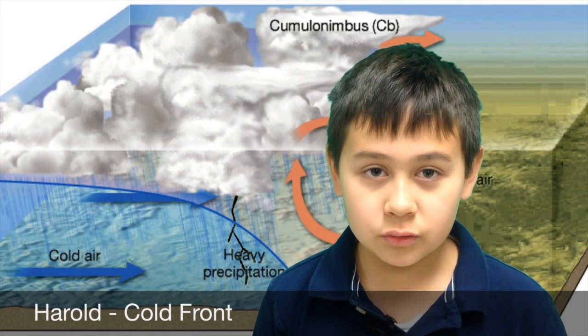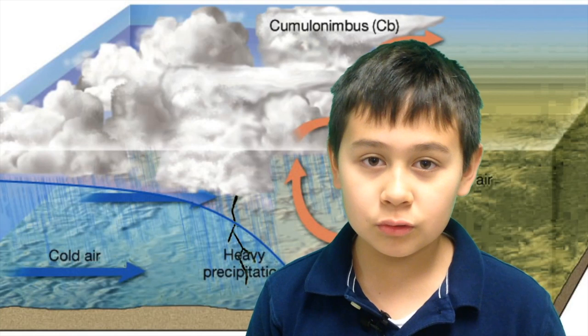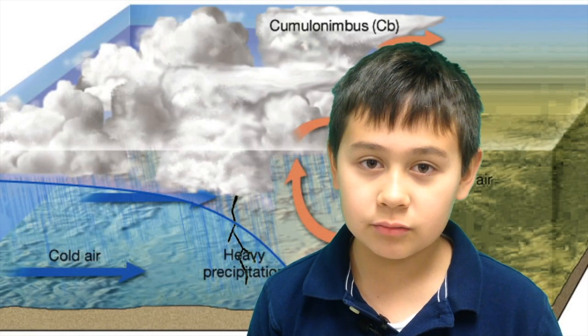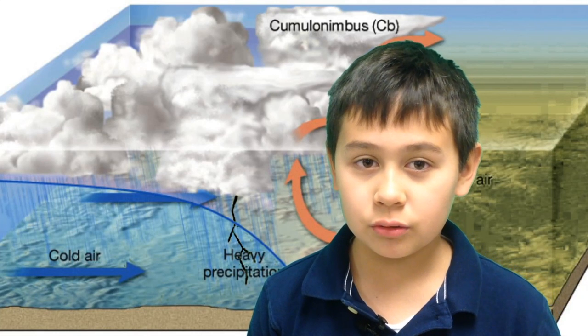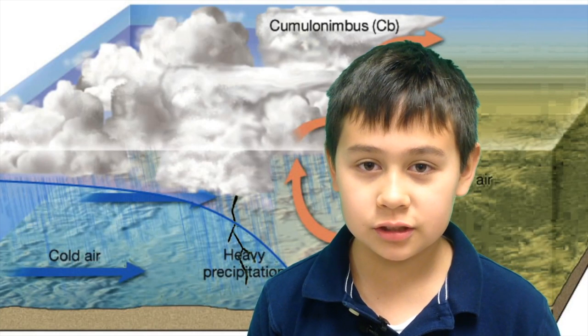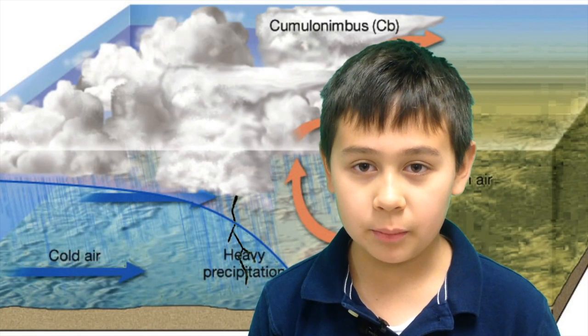See this cold air coming towards me? That represents a cold front. A cold front occurs when a rapidly moving cold air mass brushes away a warm air mass.